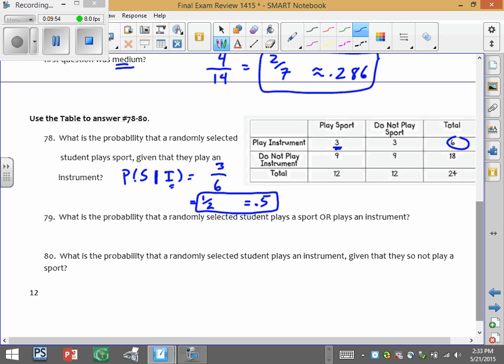What's the probability that a randomly selected student plays a sport or instrument? So we see the word or. So we have probability of sport or instrument. So the probability they play a sport, there are 12 students that play sports out of 24.